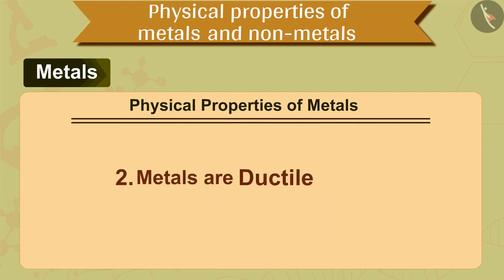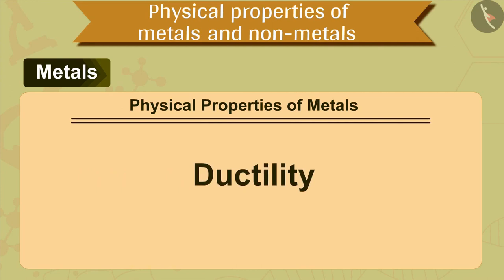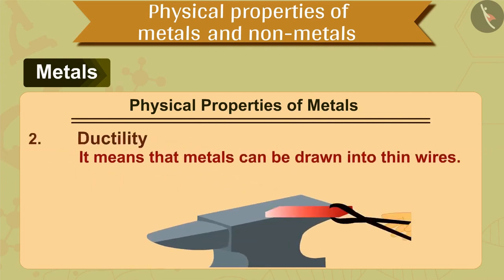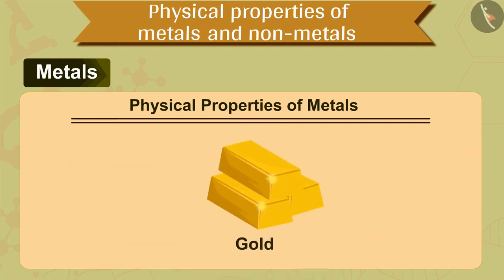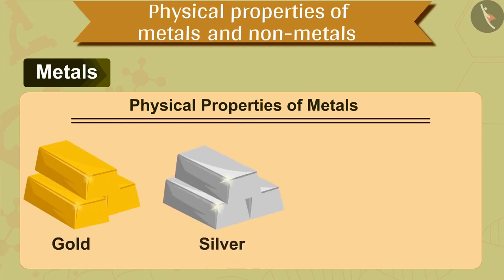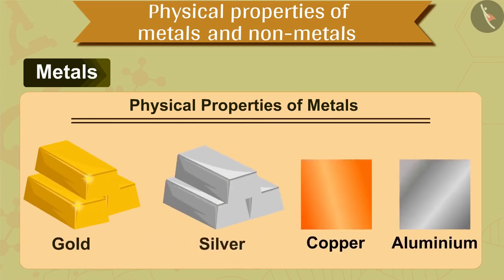The second property is that metals are ductile. What is the meaning of ductility? It means that metals can be drawn into thin wires. Gold is the most ductile metal. Silver is also among the best ductile metals. Copper and aluminium metals are also ductile and can be drawn into thin copper wires and aluminium wires.